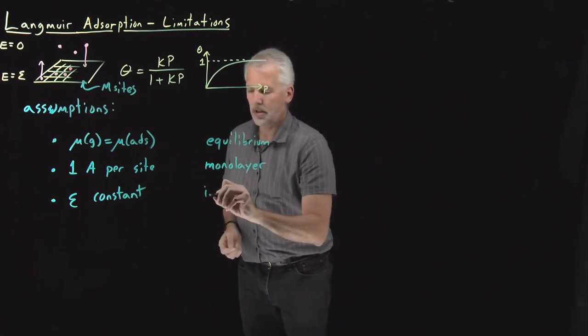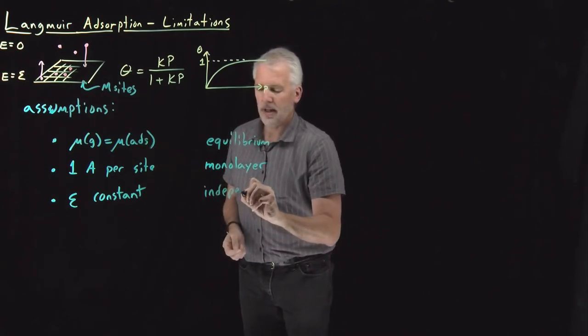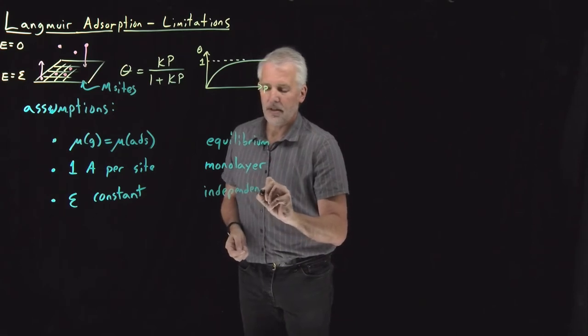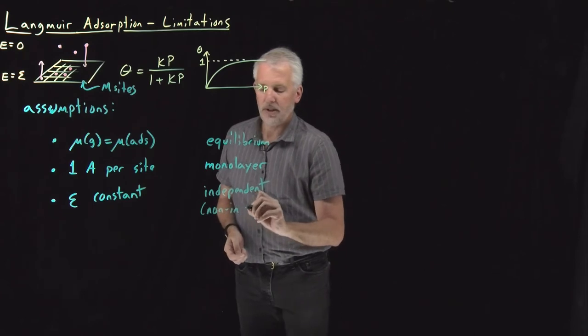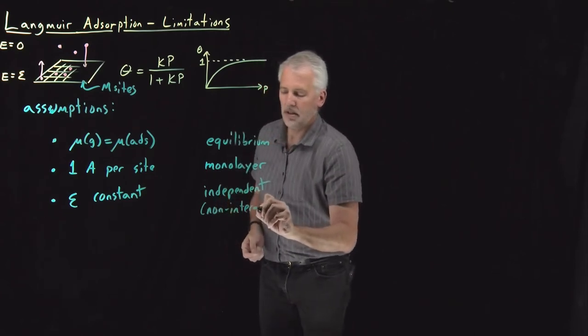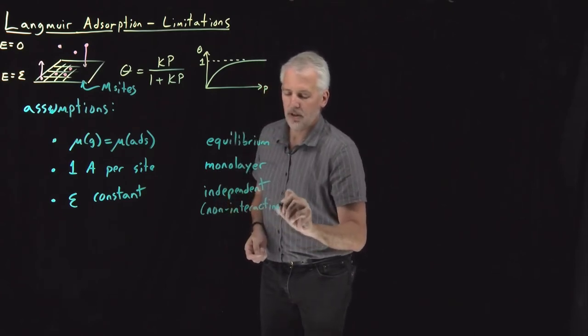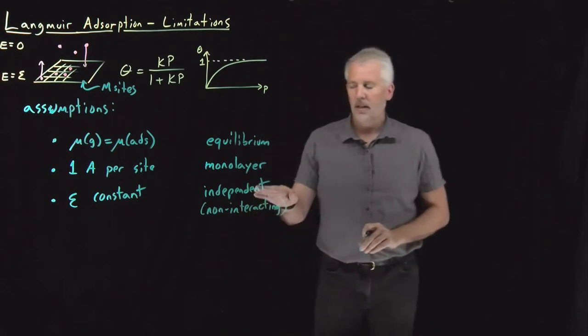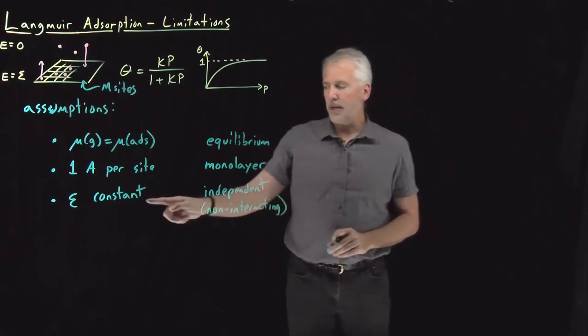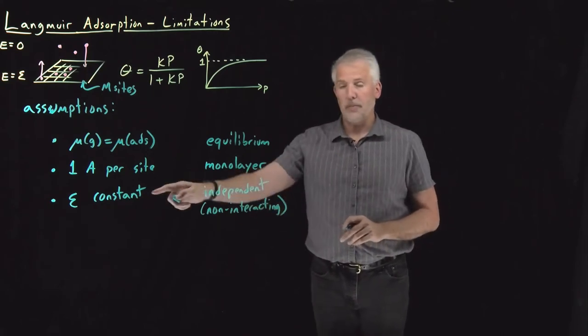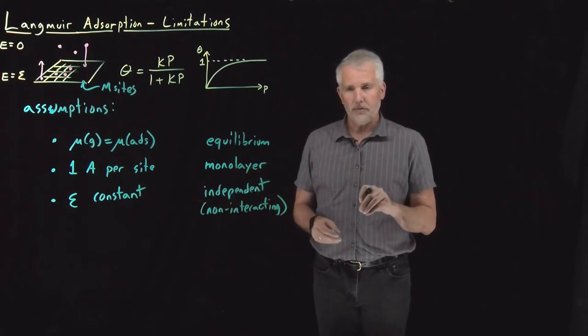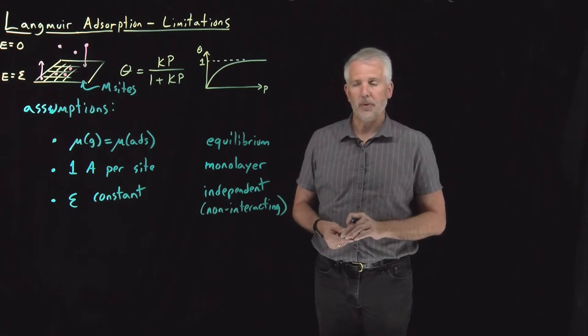So we've assumed that each of these binding events is independent and that the adsorbate species don't interact with each other. So that's the assumption that we made by assuming that epsilon was a constant instead of allowing epsilon to depend on where I bind on the surface or whether I have another neighbor next to me when I bind.